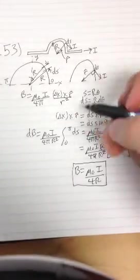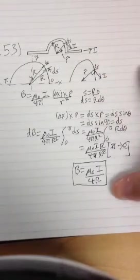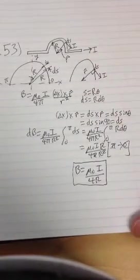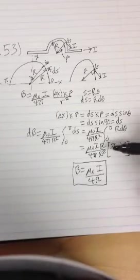So if this is y, x, and positive k, then it would be a negative k hat magnetic field. But this is the only thing you need to do for this problem, the magnitude of the magnetic field.